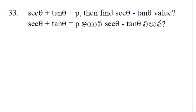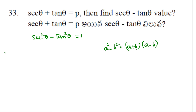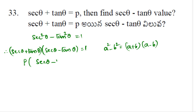If secθ + tanθ = p, then find secθ − tanθ. We know that sec²θ − tan²θ = 1. Using a² − b² = (a + b)(a − b), we get secθ + tanθ times secθ − tanθ = 1. Since secθ + tanθ = p, we have p × (secθ − tanθ) = 1. So secθ − tanθ = 1/p. The answer is 1/p.